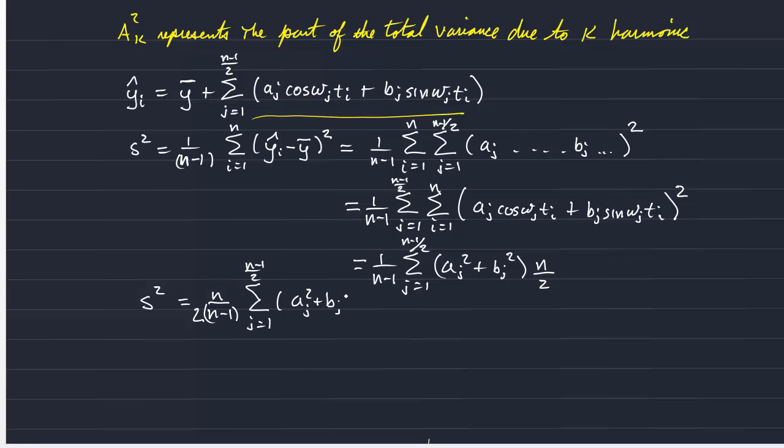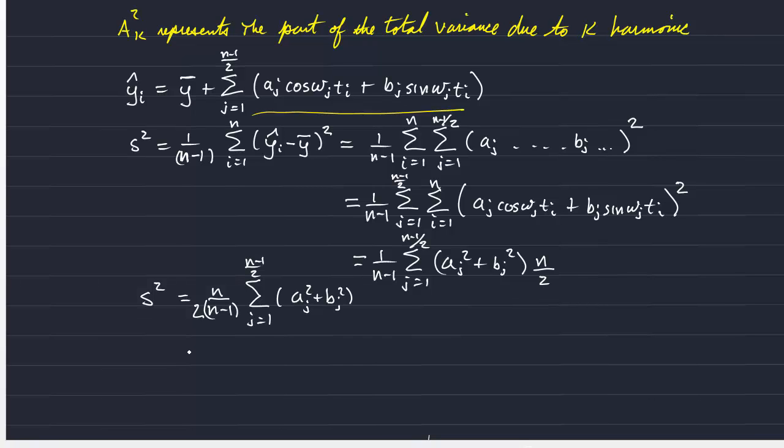Plus b sub j squared. And that's simply the sum over capital A squared.